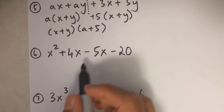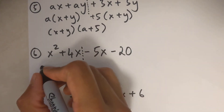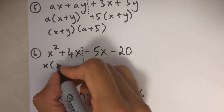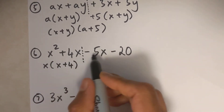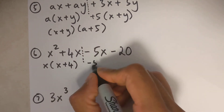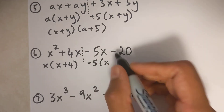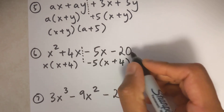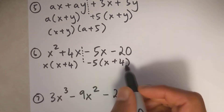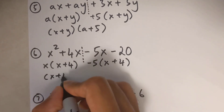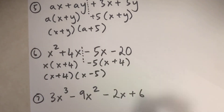Let's try the next one. I put my dotted line there, then common factor out an x, leaving x plus 4. Over here I'm going to common factor out a negative 5, so this becomes x plus 4 — because negative 20 divided by negative 5 is positive 4. The brackets are identical, so I common factor them out and that is my final solution.